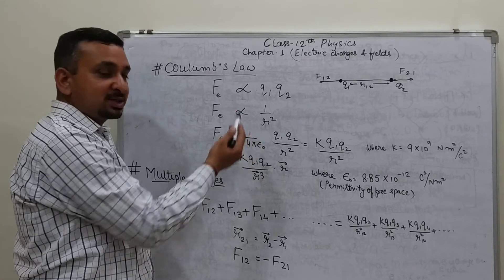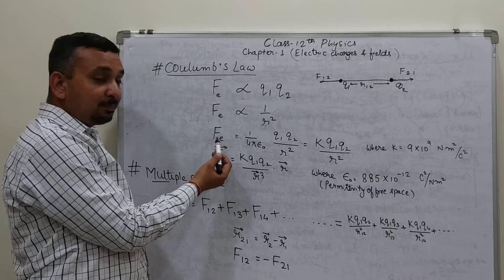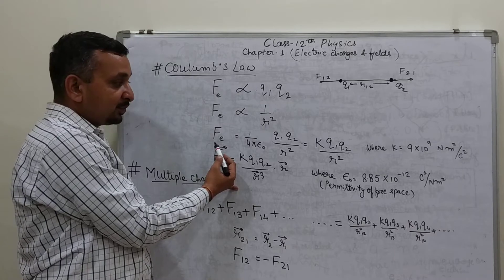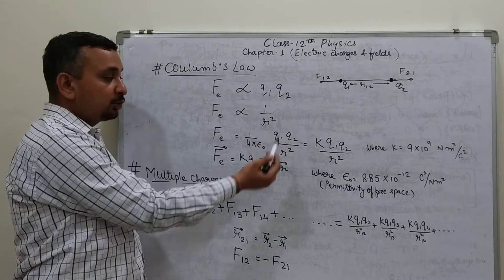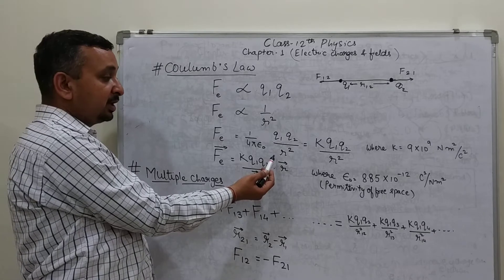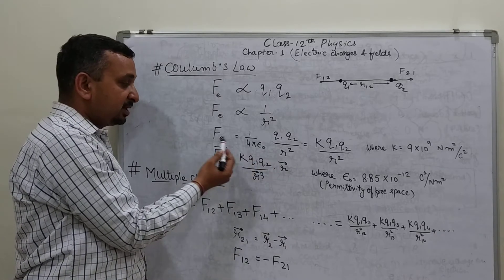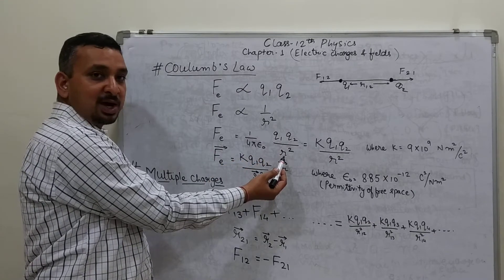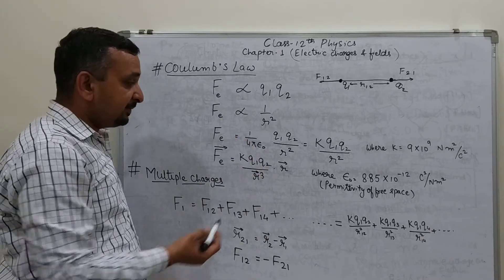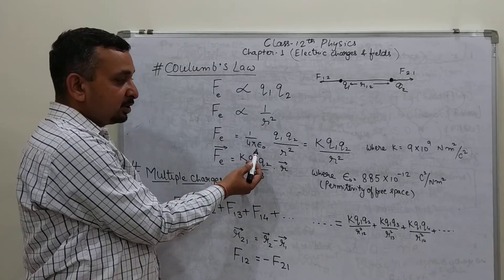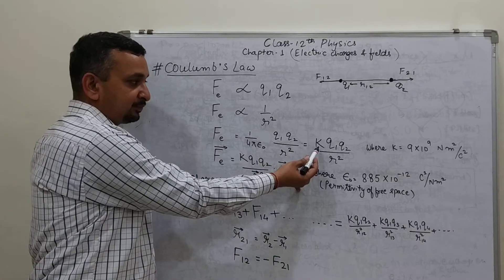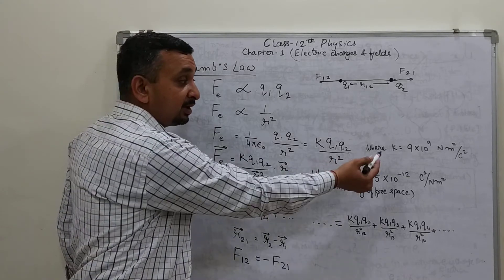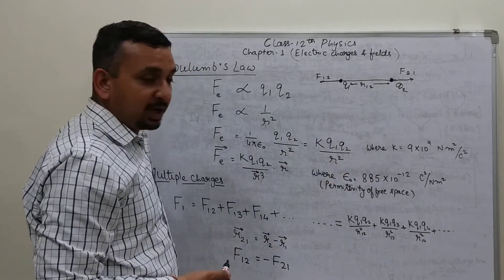Now if we combine both terms, we get: electric force is directly proportional to q1·q2 upon r-square. Using a proportionality constant, electric force equals 1 upon 4·pi·epsilon_0 times q1·q2 upon r-square. This 1 upon 4·pi·epsilon_0 is the proportionality constant, also represented as k. So we can write electric force equals k·q1·q2 upon r-square, where k equals 9×10⁹ Newton·meter-square per Coulomb-square.